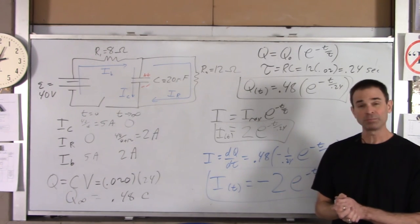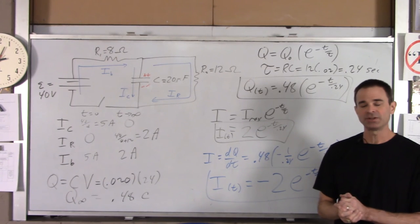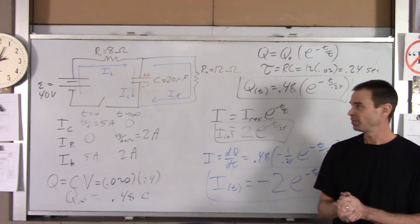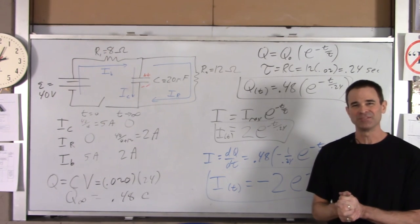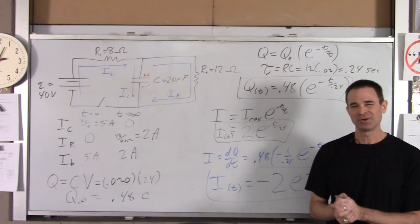That's an example of an RC circuit with more than one branch. We found the current and charge as functions of time in all parts of the circuit. Thank you very much — I hope that was helpful.